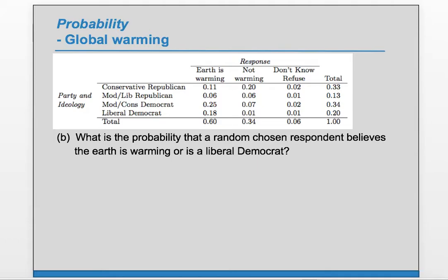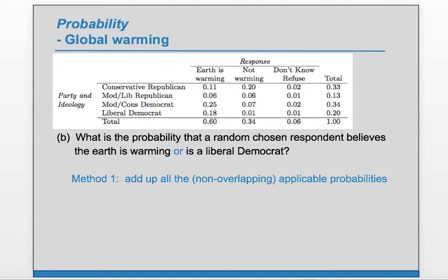Part B: what is the probability that a randomly chosen respondent believes the Earth is warming OR is a Liberal Democrat? The important term is 'or.' Method one: we add up all the non-overlapping applicable probabilities — 0.11 plus 0.06 plus 0.25 plus 0.18, plus the remaining two values — giving us a probability of 0.62.